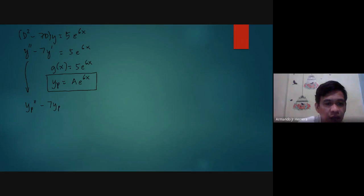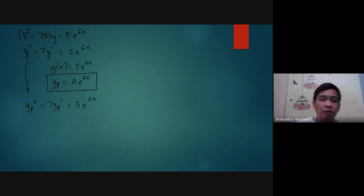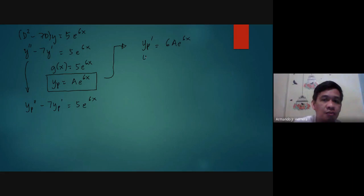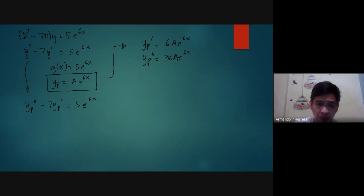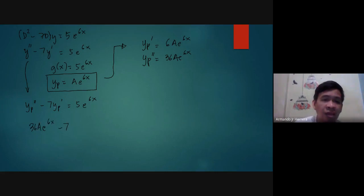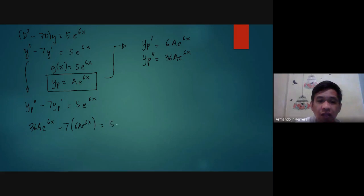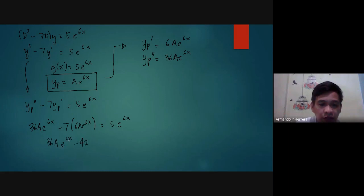From the given equation, yp double prime minus 7yp prime equals 5e to the 6x. We find yp prime equals 6ae to the 6x, and yp double prime equals 36ae to the 6x. Substituting: 36ae to the 6x minus 7 times 6ae to the 6x equals 5e to the 6x, giving 36ae to the 6x minus 42ae to the 6x equals 5e to the 6x.